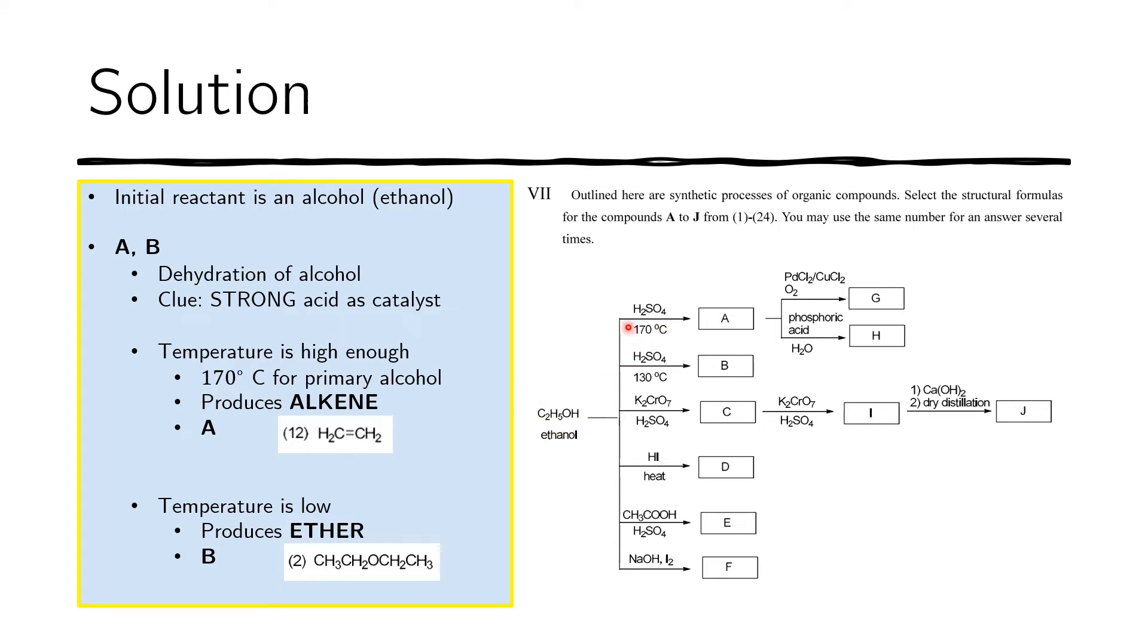However, if the temperature is low, around 130 degrees Celsius, we do not produce an alkene. We instead produce an ether. An ether is one where there is an oxygen in the middle and you have two alkyls attached to both sides of the oxygen. Here we have an ethyl on one side, on the other side we have an ethyl. So this is an ether.